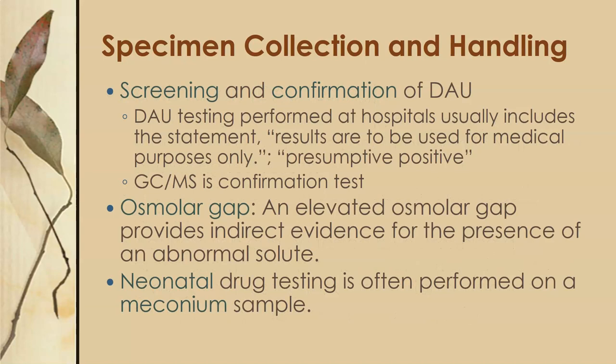A little bit on screening and confirmation of drug of abuse testing. A lot of hospitals perform drug of abuse testing, and when they do, it usually includes the statement that results are to be used for medical purposes only, or it's a presumptive positive — because hospitals and clinics use the rapid immunoassay tests, which are only screening tests. A GC-MS has to be ordered for confirmation if needed. Another way to detect substances is the osmolar gap. An elevated osmolar gap provides indirect evidence of the presence of an abnormal solute dissolved in the blood — it is the difference between the measured osmolality and the calculated osmolality.